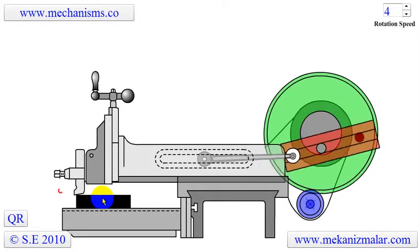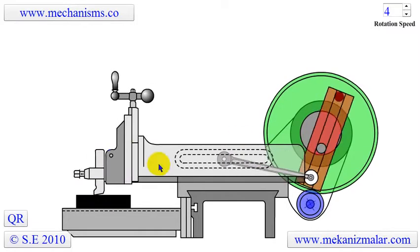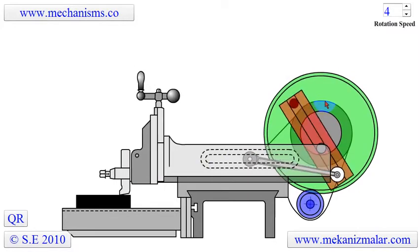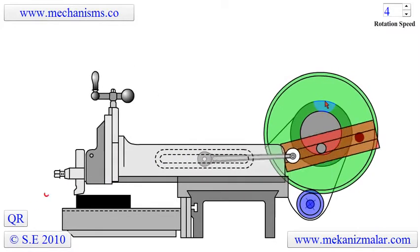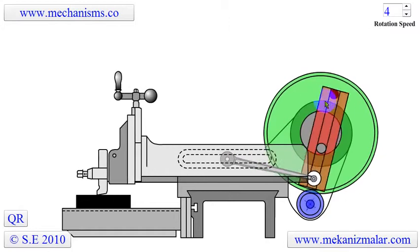The traversing head shaper uses the Whitworth quick return mechanism to drive the ram of the shaper. Since we have described the working principles of a Whitworth quick return mechanism in a previous video, we will not go into the details here.